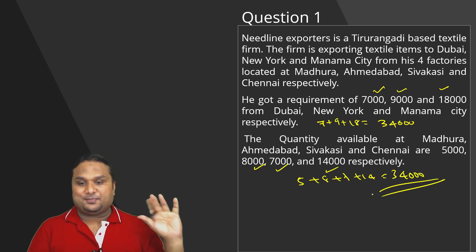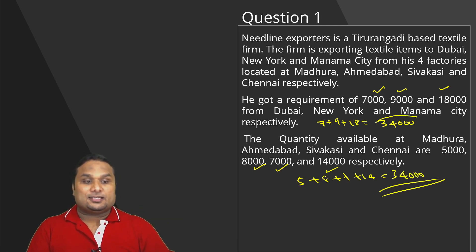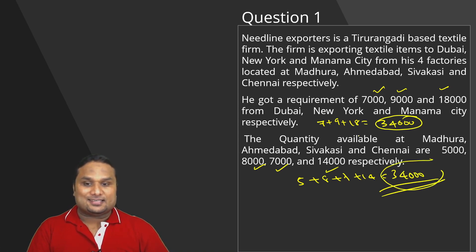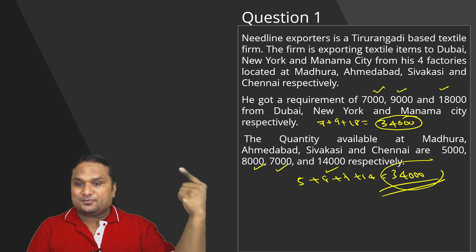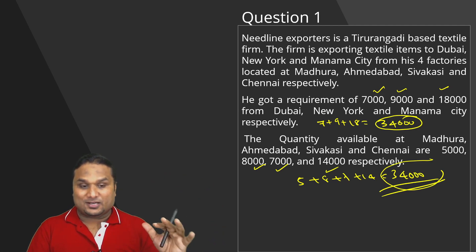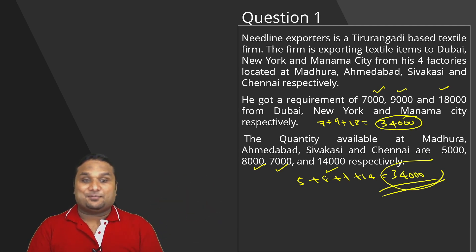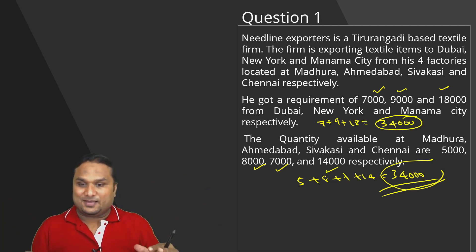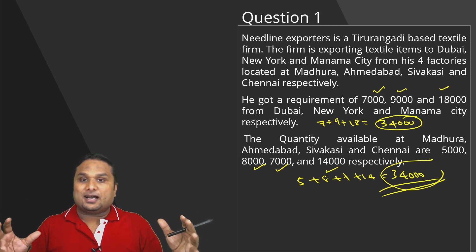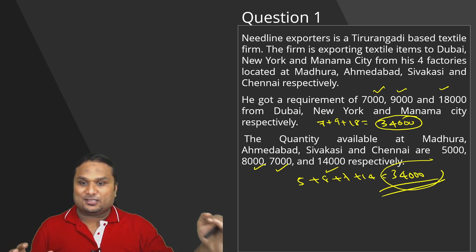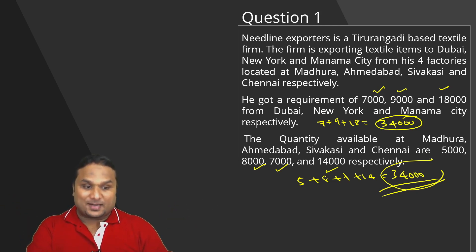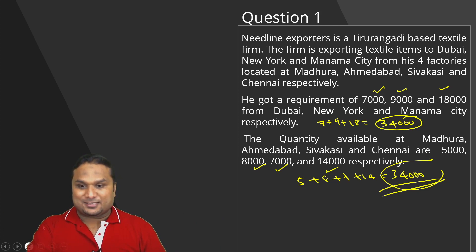Practically this will not always happen. When total demand and total supply are equal, this is called a balanced transportation problem. In the real business world, your total demand might be 50,000 while your total supply is only 30,000, or production could be 60,000 with demand of only 40,000, leaving 20,000 units unsold. But for the initial questions we are learning, all are balanced transportation problems.